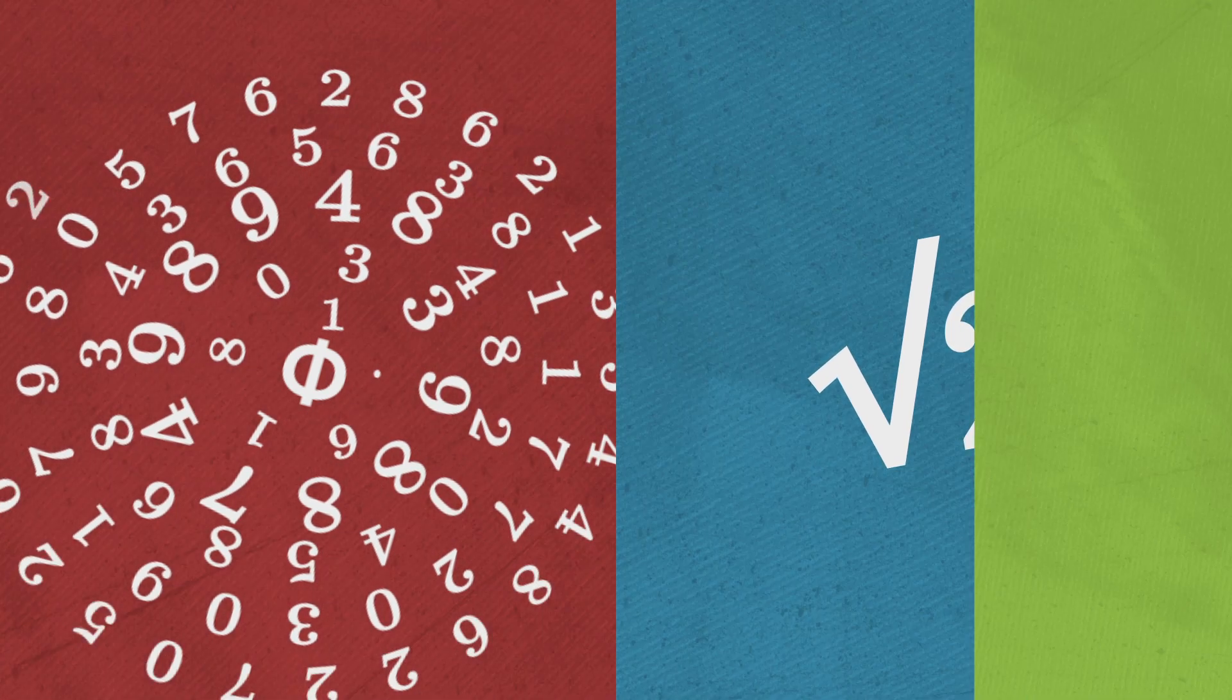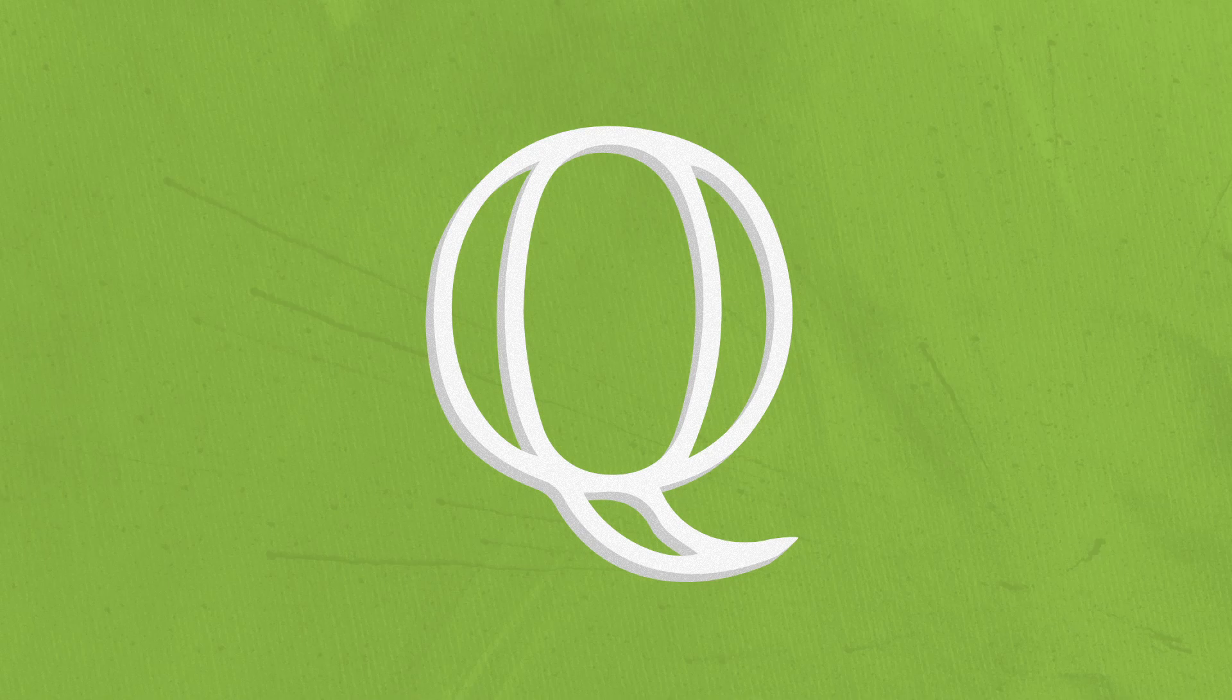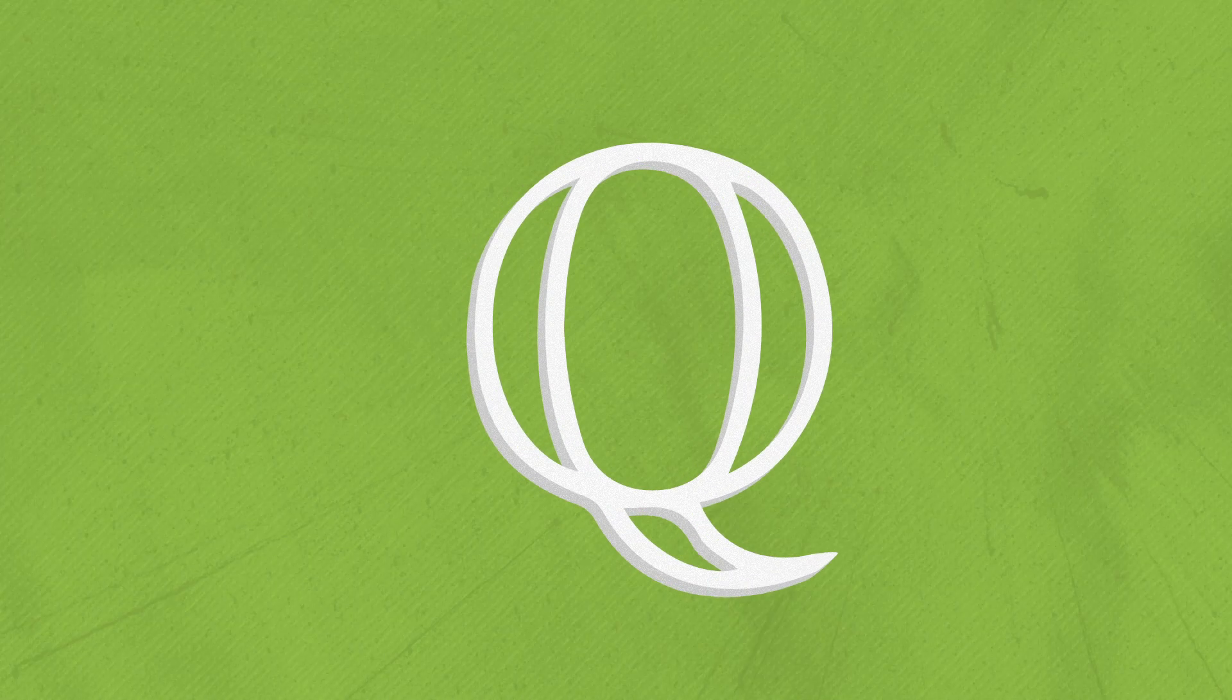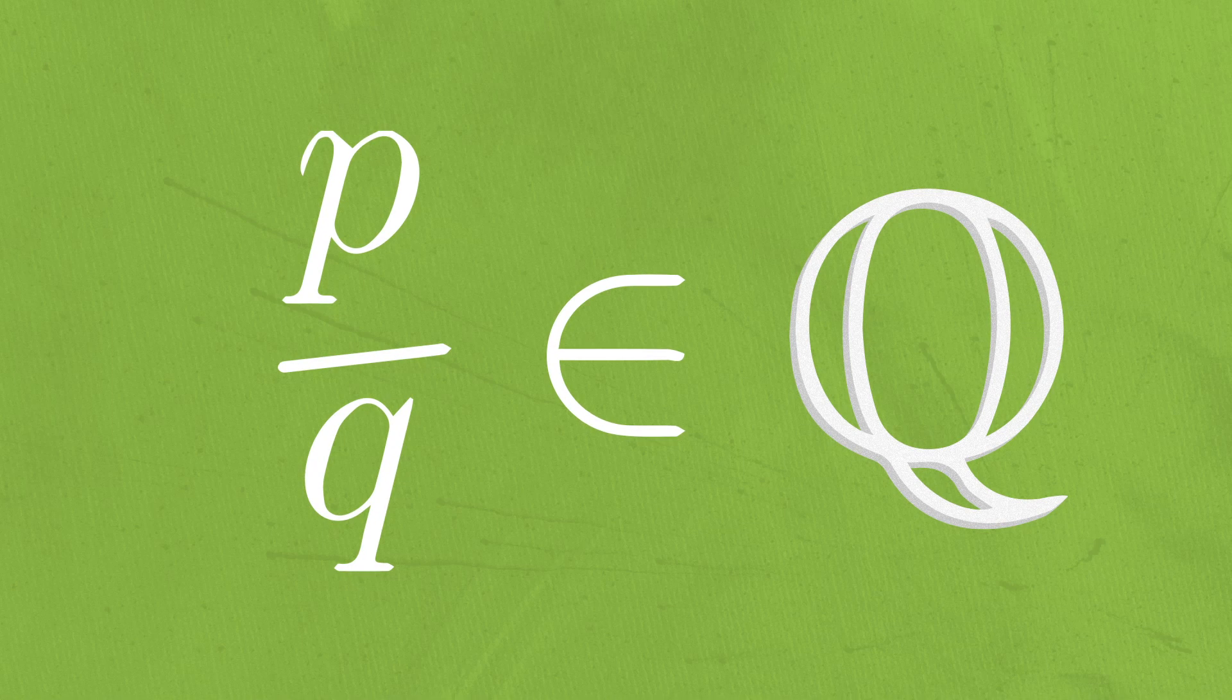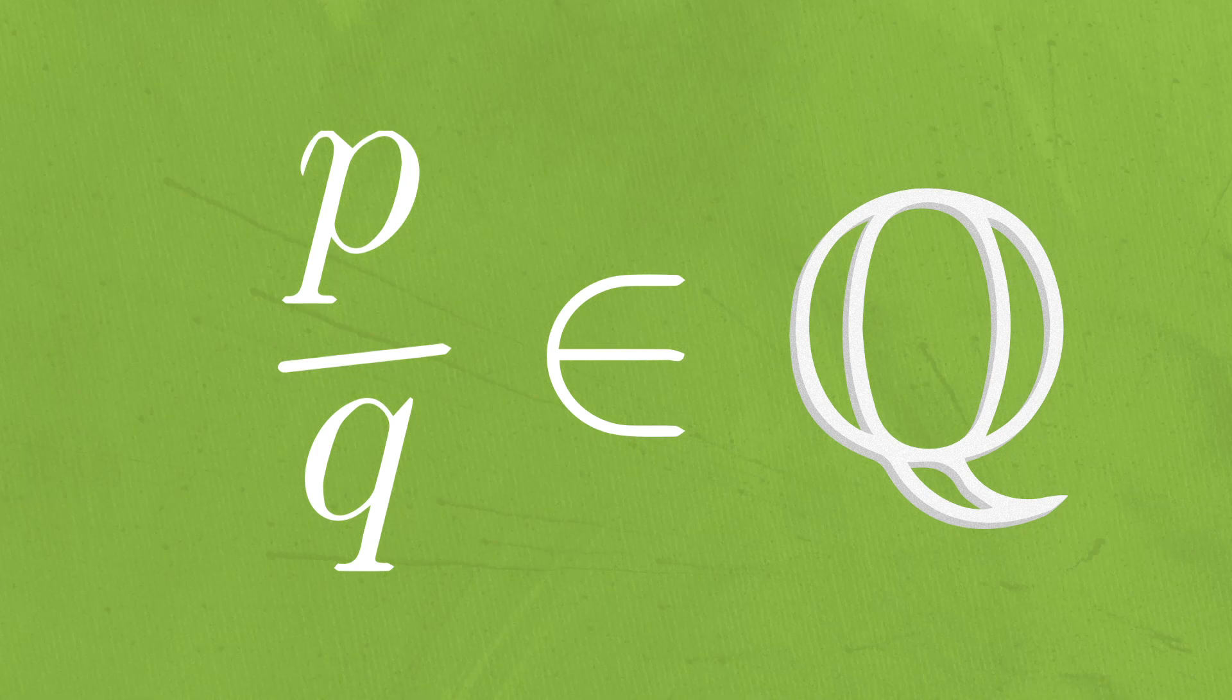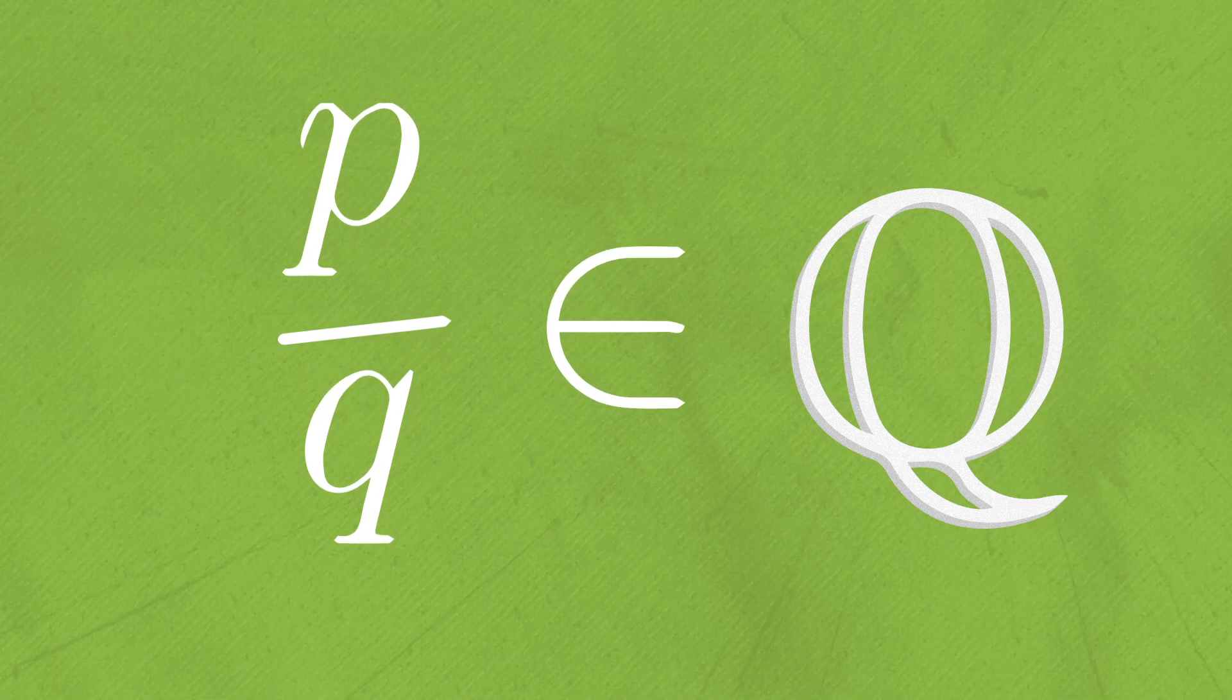Describing the rational numbers isn't too difficult. Technically to be precise we need to talk about equivalence classes, but for now we'll stick with our intuitive notion of rational numbers as ratios of whole numbers. But now I ask, how do you define an irrational number?